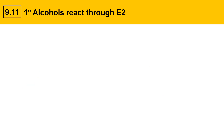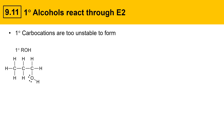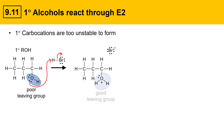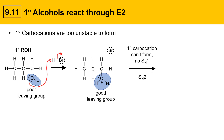Primary alcohols react through an SN2 mechanism, because primary carbocations are just too unstable to form. Let's take a look at an example with a primary alcohol. Again, the hydroxy group is a poor leaving group. If we put this in with an acid like HBr, the acid can protonate the OH group, generating a protonated OH, which is a good leaving group. That'll leave as water. A primary carbocation is just too unstable, so an SN1 mechanism isn't going to happen here. Instead, an SN2 reaction can happen, where the Br⁻ attacks the carbon bearing the leaving group. The leaving group leaves, and that gives an alkyl bromide.